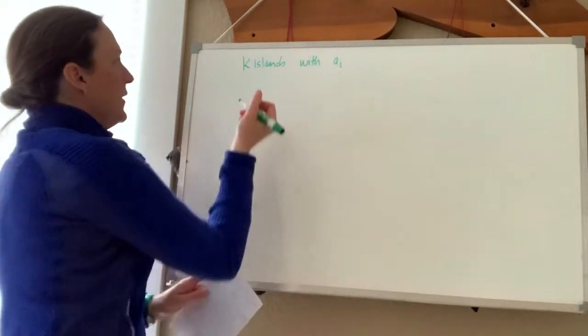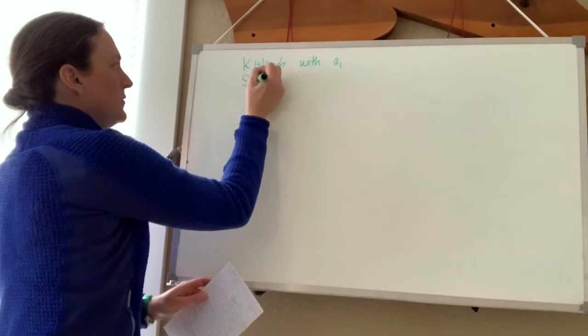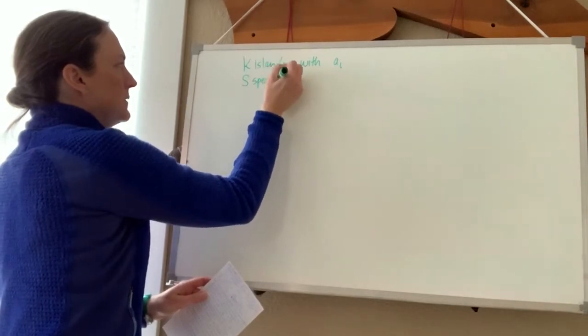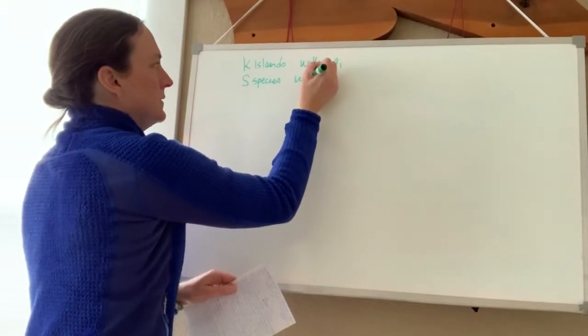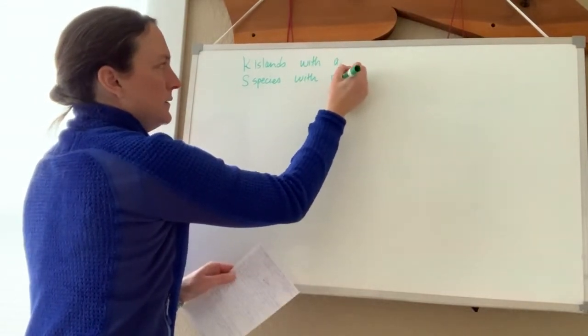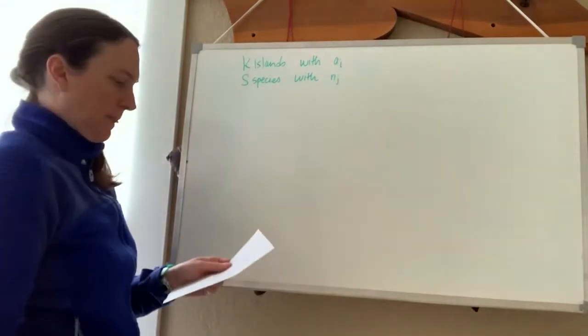And then we have s number of species, and each species has an abundance n_j.